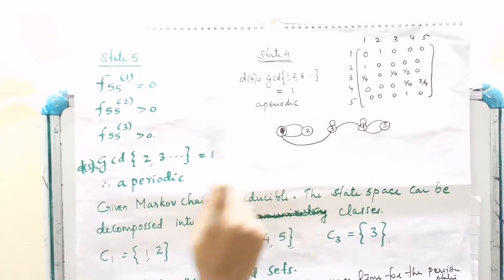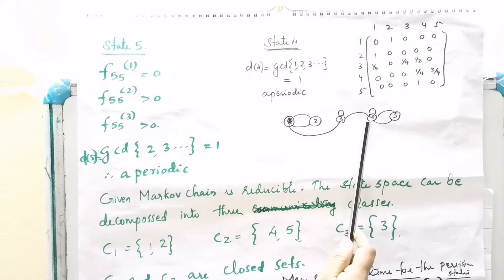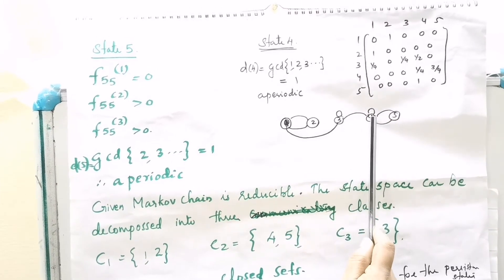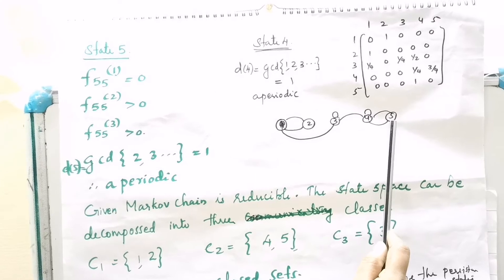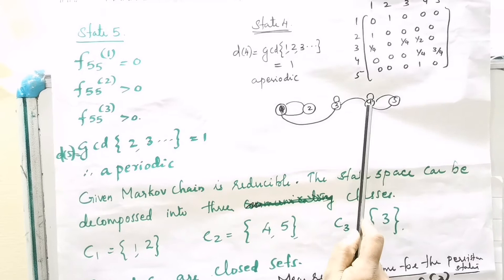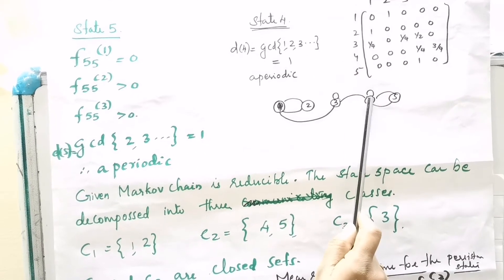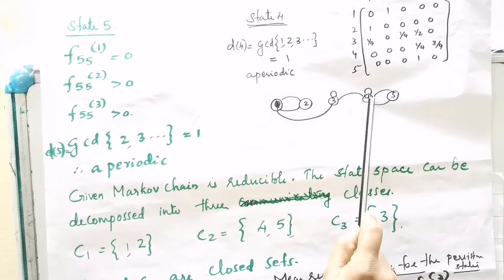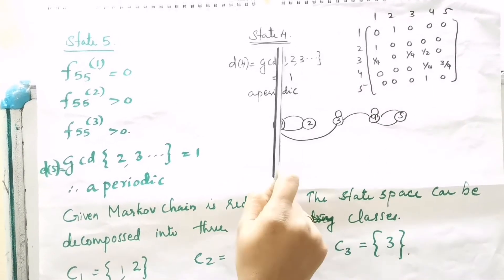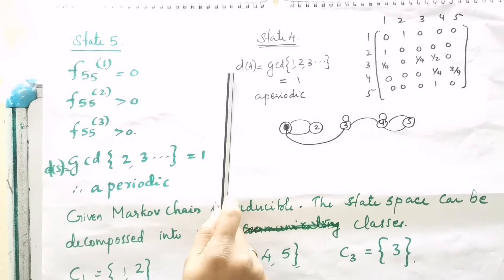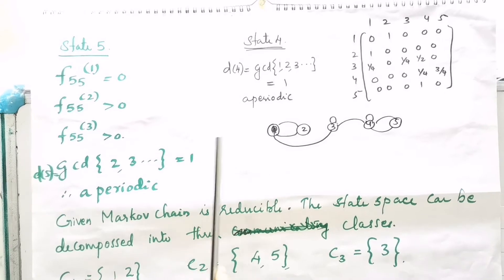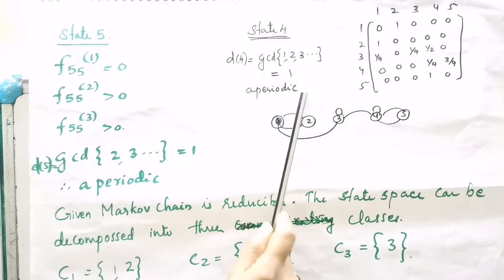Now consider state 4. Starting from 4, reaching 4 in 1 step is possible. Starting from 4, going to 5 then back to 4 — that is in 2 steps — is possible. Starting from 4, going 4 to 4 then 4 to 5 then 5 to 4 — in 3 steps — is also possible. So the GCD of {1, 2, 3, ...} equals 1, meaning state 4 is aperiodic.